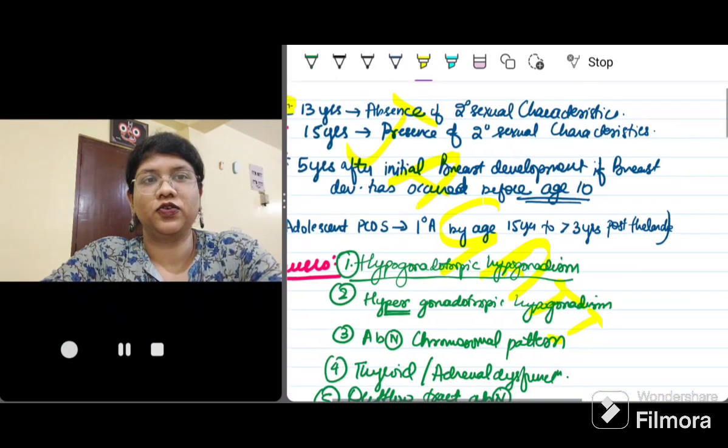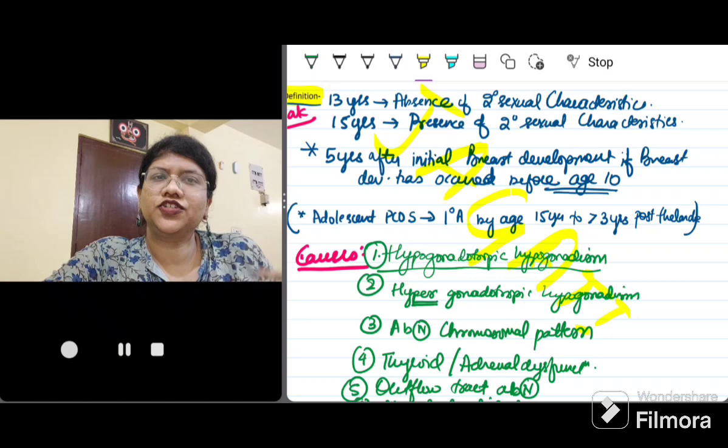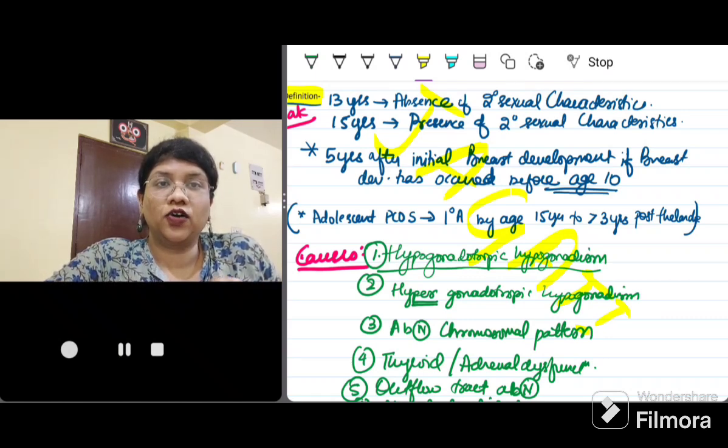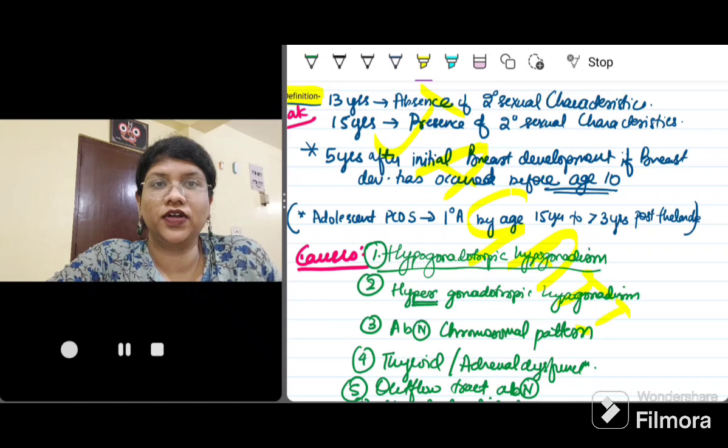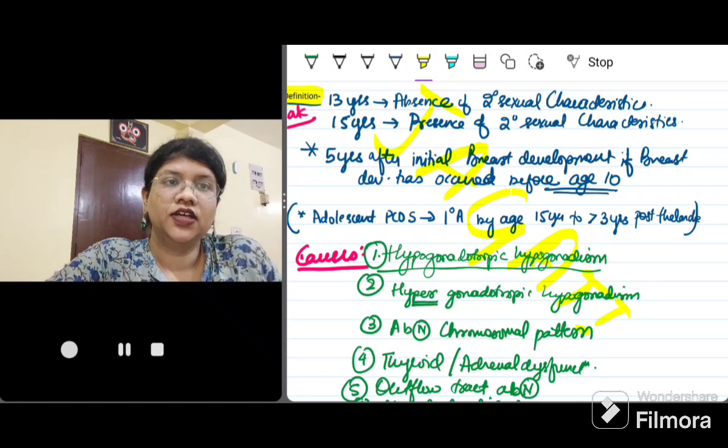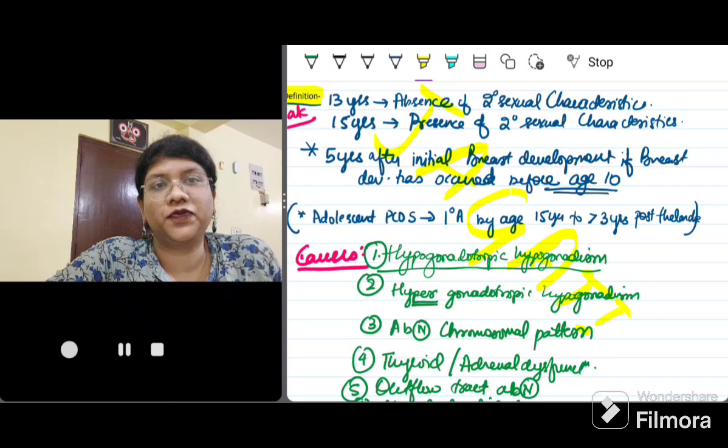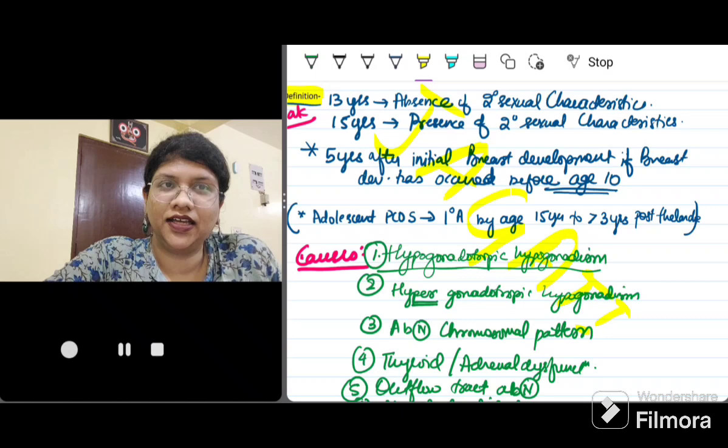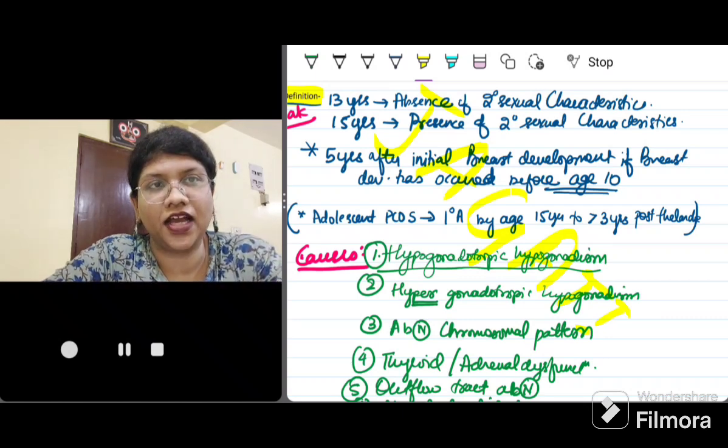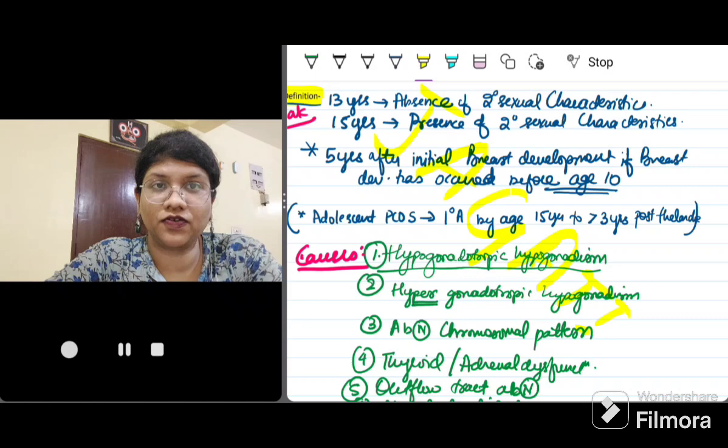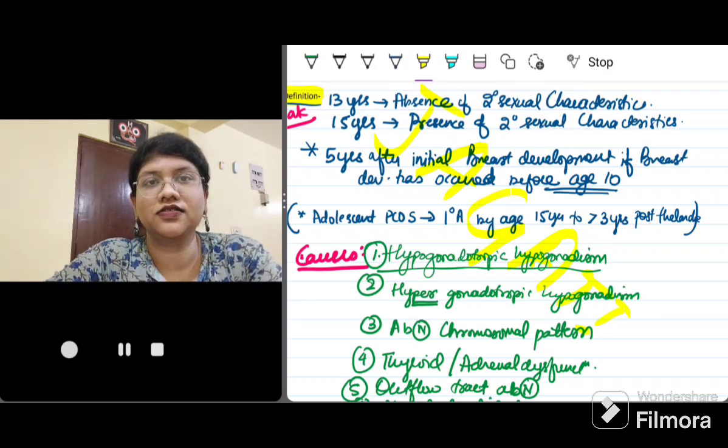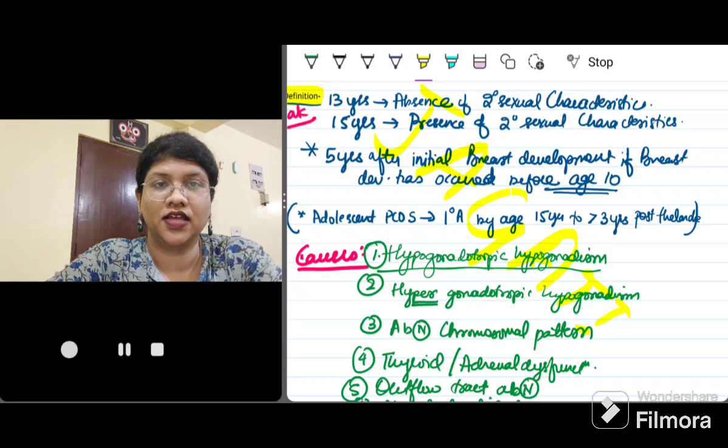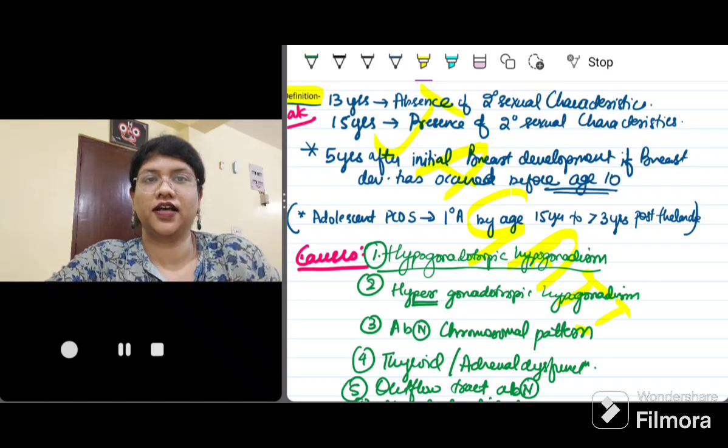Remember that this can be confused with another topic which we shall be discussing later, that is adolescent PCOS. As per the new definition of irregular menses, they have mentioned primary amenorrhea by the age of 15 years or more than three years post thelarche. So keep that separately and only remember the definition of primary amenorrhea as 13 years in absence of secondary sexual characteristics and 15 years in the presence of secondary sexual characteristics.